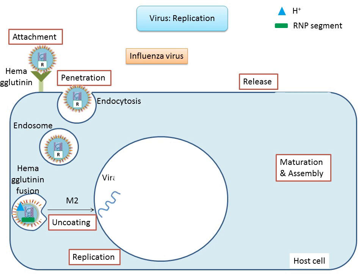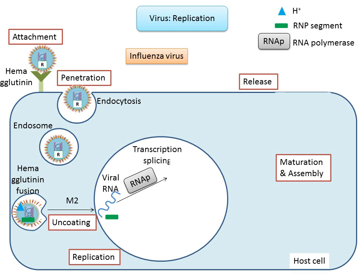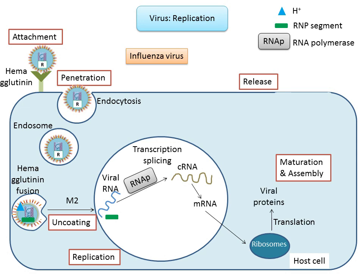The influenza viral genome is made up of negative-sense strands of RNA. In order for the genome to be transcribed, it must first be converted into positive-sense RNA to serve as a template for viral RNAs. Replication does not require a primer; instead, the viral RNA-dependent RNA polymerase initiates RNA synthesis internally on viral RNA. mRNA is translated by host ribosomes in the cytoplasm to make viral proteins. Once a high concentration of nucleoprotein accumulates in the cytoplasm, viral mRNA synthesis stops but genomic RNA synthesis continues, switching the virus from protein synthesis mode into assembly mode.